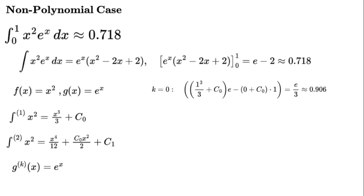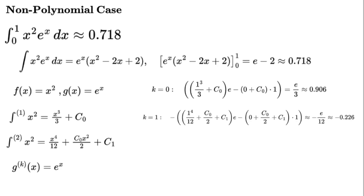For k equals 0: (1 cubed over 3 plus c₀) times e minus (0 plus c₀) times 1 equals e over 3, approximately 0.906. For k equals 1: negative 1 times (1 to the power of 4 over 12 plus c₀ over 2 plus c₁) times e minus (0 plus c₀ over 2 plus c₁) times 1, approximately negative e over 12, approximately negative 0.226.